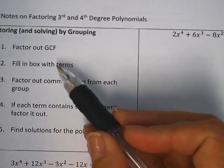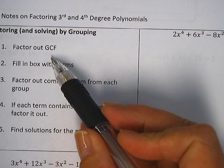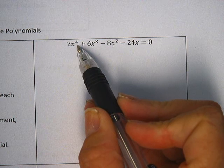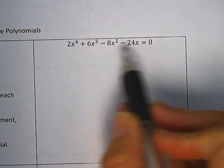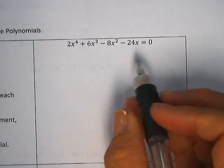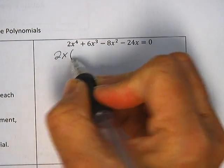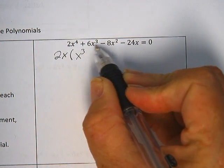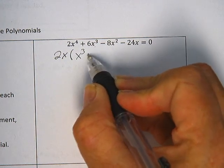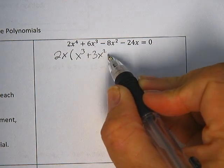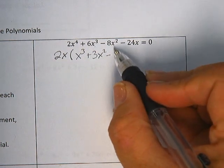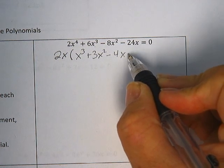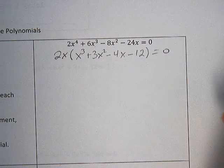Our first step is to factor out any GCF, our greatest common factor. Looking at the equation we have, it's a fourth degree polynomial. It looks like I have an x in every term, as well as a 2, so I'm going to factor out a 2x. 2x fourth divided by 2x leaves me an x cubed. 6x cubed divided by 2x gives me 3x squared. Negative 8x squared divided by 2x gives me negative 4x. Negative 24x divided by 2x gives me negative 12. That's still equal to zero.